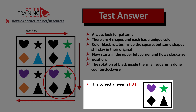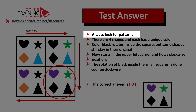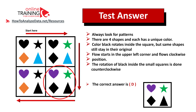The right answer here is choice D. Let's recap: always look for patterns. In this case there are four shapes and each shape has a unique color. The color black rotates inside the square, but the same shapes stay in their original positions, and the rotation is done counterclockwise. Hopefully you've nailed this question and now know how to answer similar problems on the test.